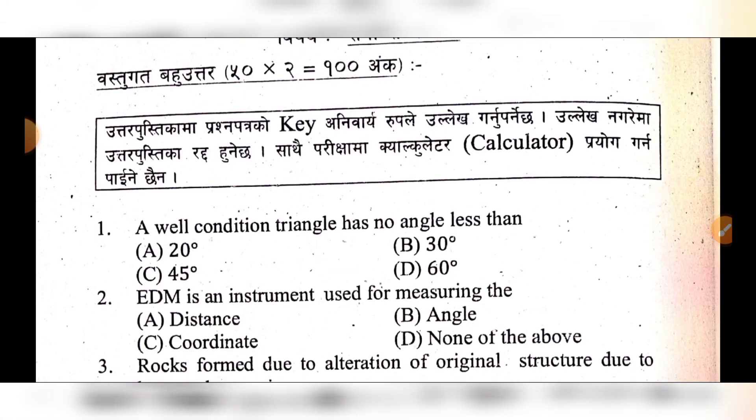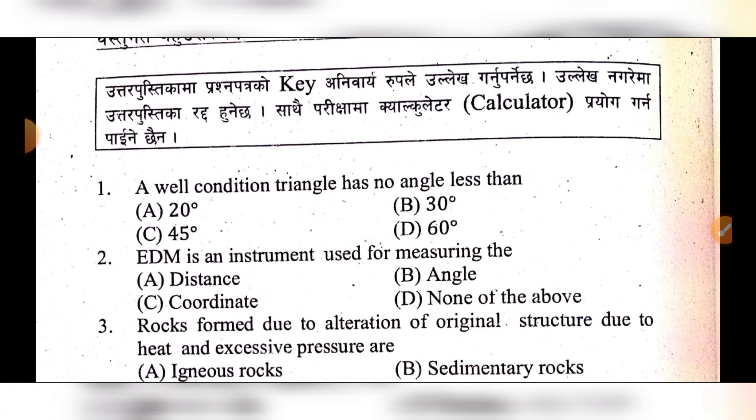Question 1: A well-conditioned triangle has no angle less than — option A: 30 degrees, option B: this degree, option C: vitality or disagree, option D: 30 degrees. The answer is option D: 30 degrees.